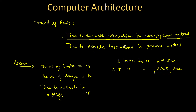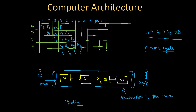Now we find the time to execute in the pipeline method. If you watch the pipelining method carefully, the first instruction's result comes after four clock cycles. However, since other instructions' intermediate executions are overlapped with the previous instructions, after the first instruction completes at four clock cycles, the other instructions' results come in subsequent clock cycles one by one.